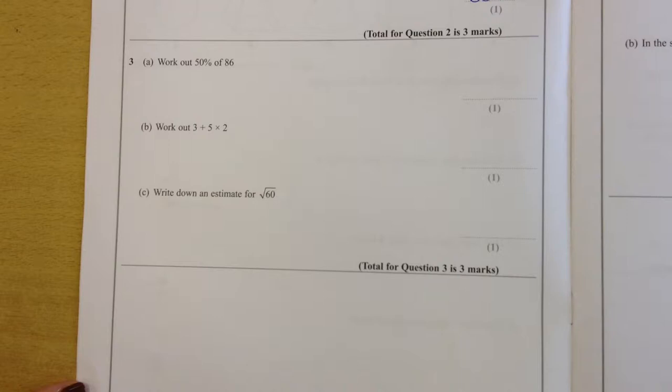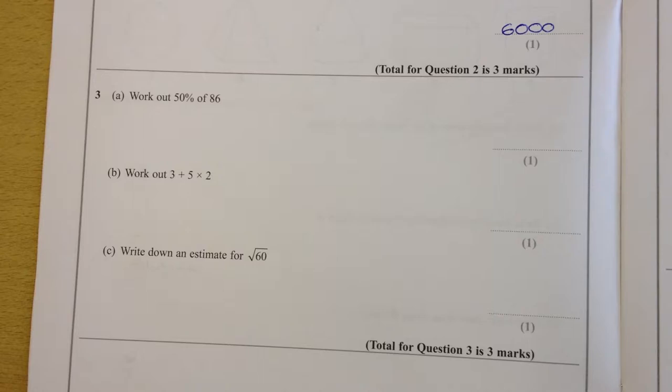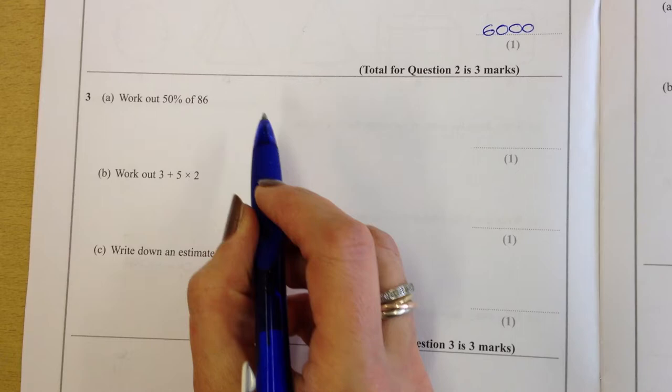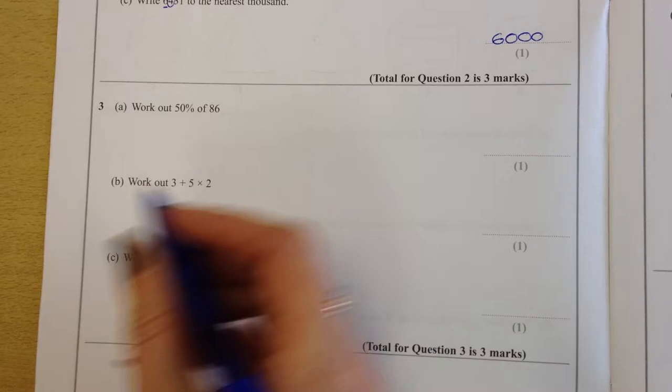On to number 3 then. Work out 50% of 86. You should be able to find 50% of anything pretty straightforwardly. 50% is obviously half. So half is easy to find out just by dividing by 2. So 86 divided by 2 is 43.